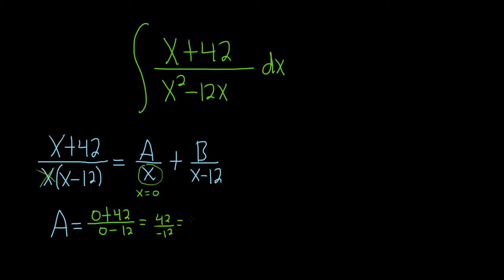7 times 6 is 42, so 6 goes into 42 7 times. This will be negative 7 over 2. So A equals negative 7 halves. That's our A.